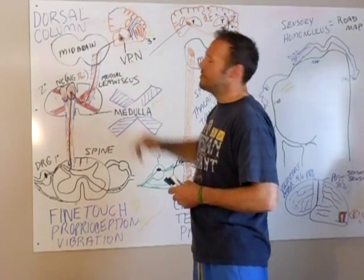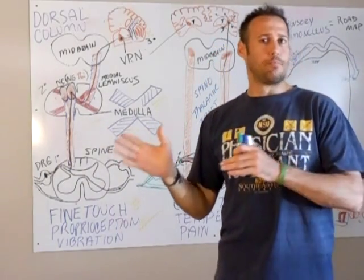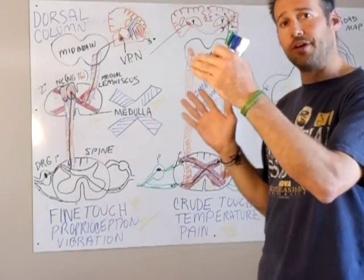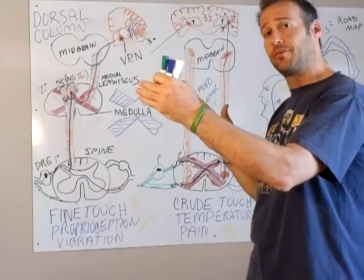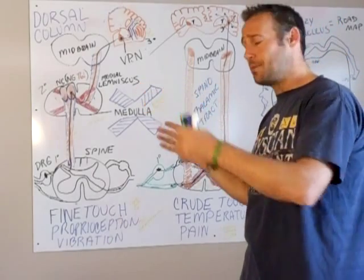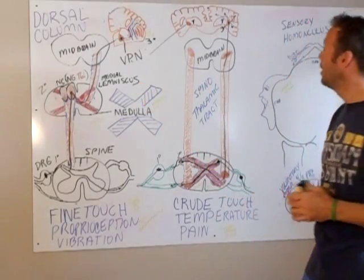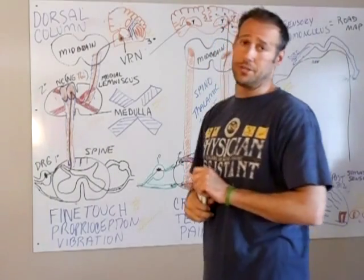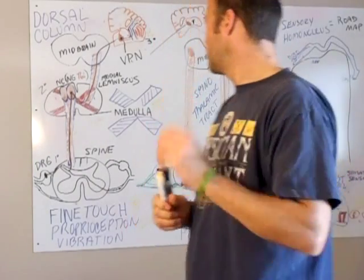The anterior capsule is bordered by the caudate nucleus and the lenticular nucleus. So that's good to know.